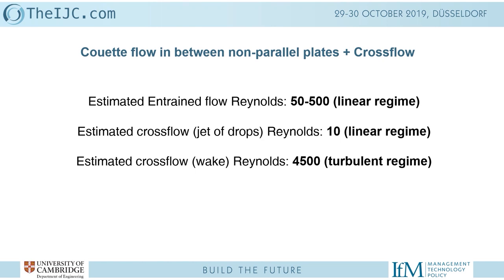For those who want to know more about the flow regimes: the entrained flow should be in a fairly linear regime for those curved flows. The Reynolds number of the drops is about 10 — quite linear. The estimated cross-flow considering the wake of air produced by the drops would be in a turbulent regime. We could potentially study combinations of these flows in terms of simulation and calculations.